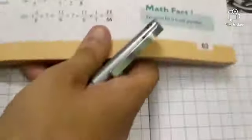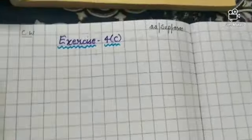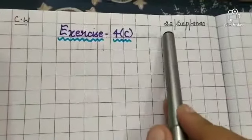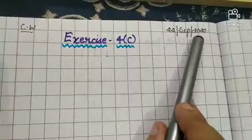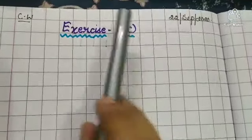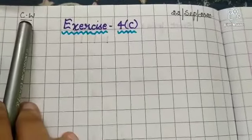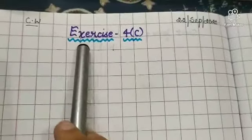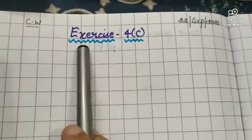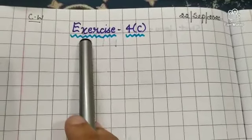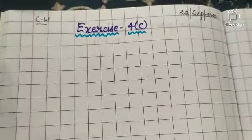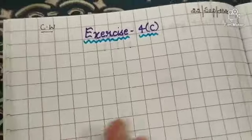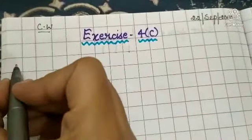Children, open your maths notebook. Put today's date — 22nd of September 2020. Then write down class work, and after that write down exercise 4C. Now note down question number 10 from your book.